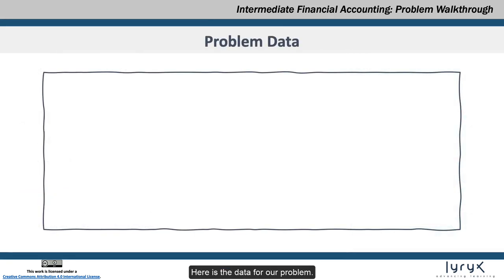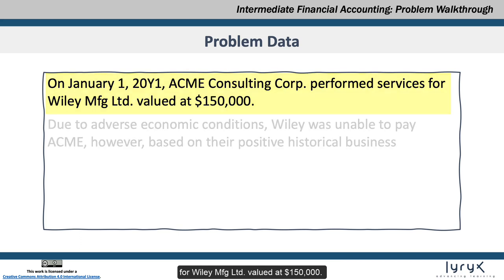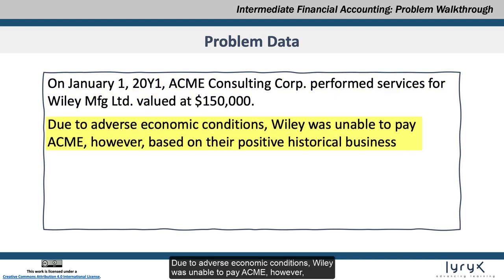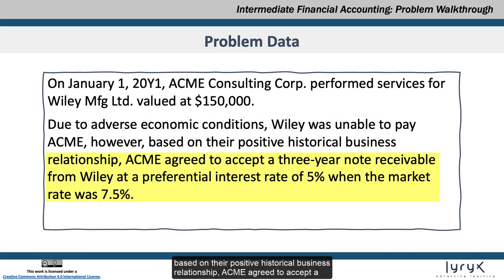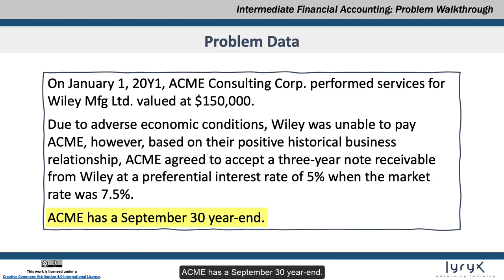Here is the data for our problem. On January 1, 20Y1, Acme Consulting Corporation performed services for Wiley Manufacturing Limited valued at $150,000. Due to adverse economic conditions, Wiley was unable to pay Acme. However, based on their positive historical business relationship, Acme agreed to accept a three-year note receivable from Wiley at a preferential interest rate of 5% when the market rate was 7.5%. Acme has a September 30th year-end.